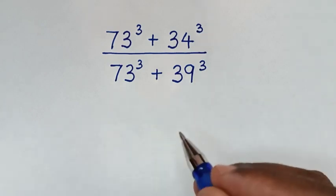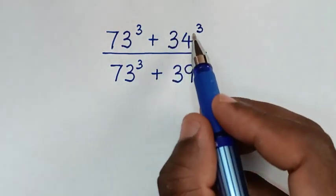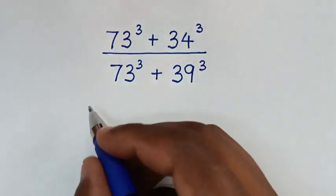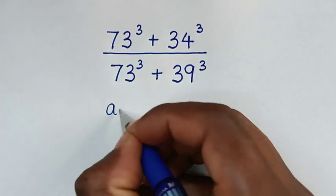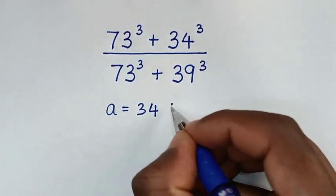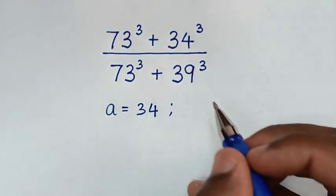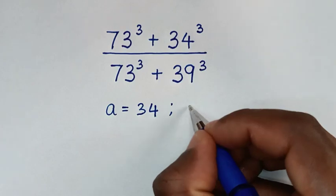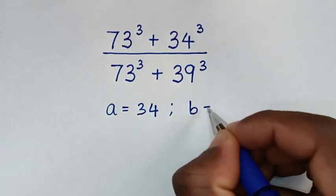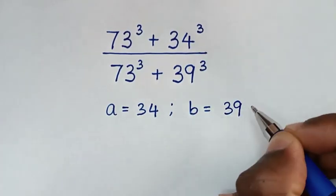Now, in the first step, this 34 will let us A. So, A is equal to 34. And this 39 will let us B. Then B is equal to 39.